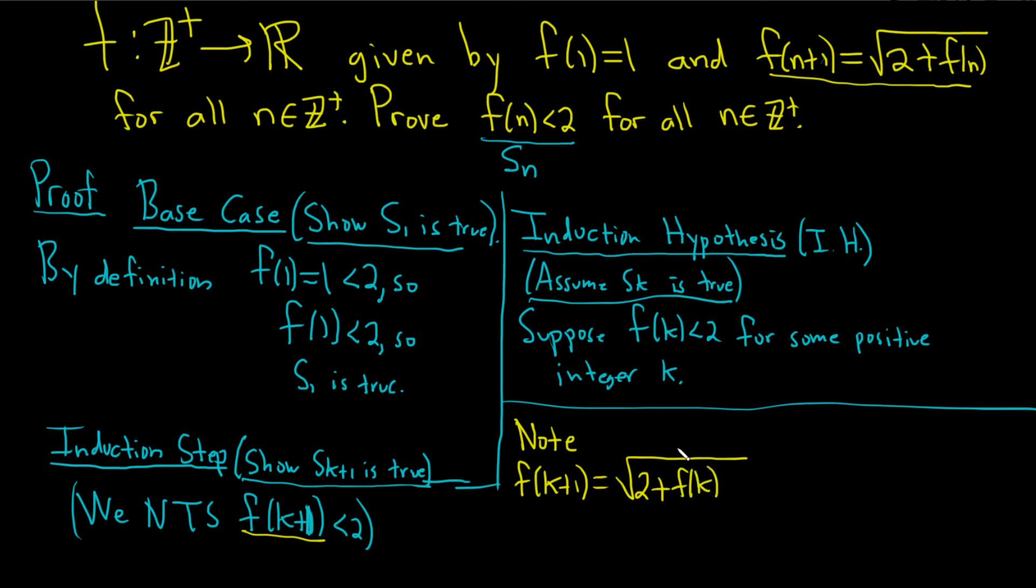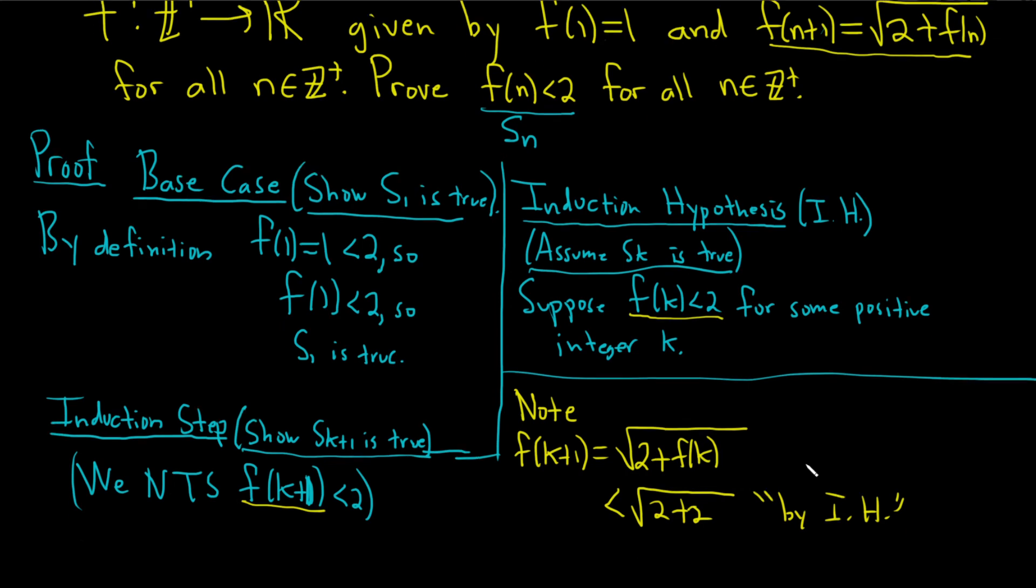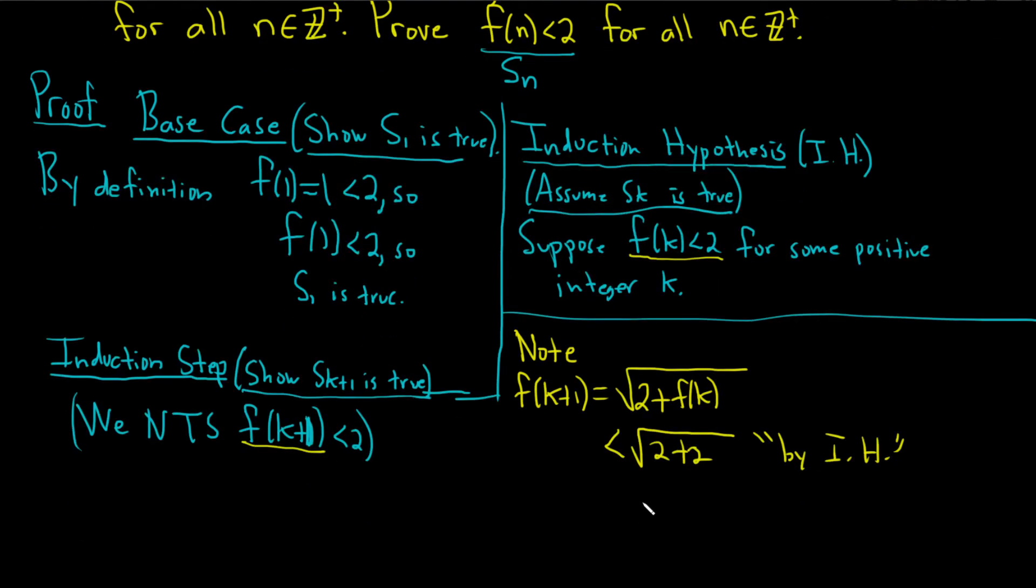And now we can use the induction hypothesis, because we have f(k). You see, f(k) is less than 2. So this is less than the square root of 2 plus 2. And this is by the induction hypothesis, just replacing f(k) with 2. You can do that because this is less than 2. So this whole thing is less than the square root of 2 plus 2. And 2 plus 2 equals 4, and the square root of 4 is 2. So we have that f(k+1) is less than 2. So that means that S sub k plus 1 is true.